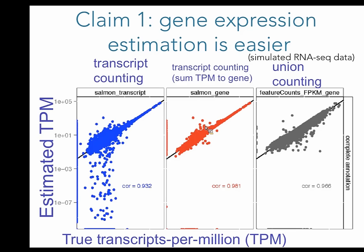And on the right is union counting — and it's actually not so bad. Highly expressed genes attract a lot of reads, lowly expressed genes don't attract many reads, and compared against the truth, union counting is not terrible. You might even favor union counting in cases where your transcript catalog is incomplete, because if you have at least a transcript that covers most of the exons of a gene, you won't go too far wrong in many situations.